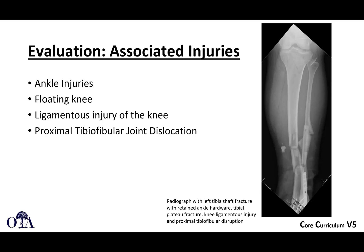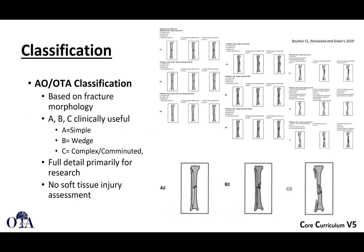Other injuries to consider include ankle injuries, floating knee when you have both a tibia and femur fracture, and occasionally associated ligamentous injury of the knee. You can also see a proximal tib-fib dislocation. On this x-ray you can see a tibial shaft fracture and a previous ankle injury, but if you look proximally there is a tibial plateau fracture — and a rim avulsion injury suggesting possible knee ligamentous injury. These are all associated injuries to look for.